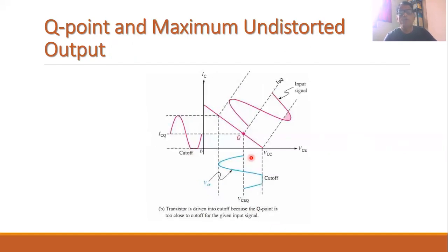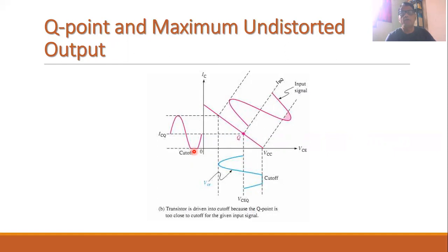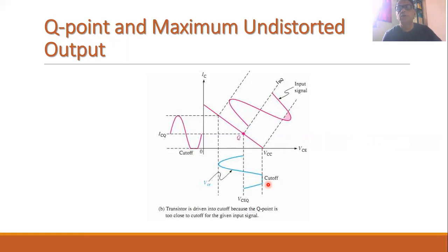Now suppose the Q point is towards the downward side and closer to the cutoff point. If it is closer to the cutoff point, then this portion of the collector current will get clipped off, and it will cause clipping in the output voltage during the positive half cycle. So again, distortions are introduced in the output waveforms when the Q point is not at the center of the load line.